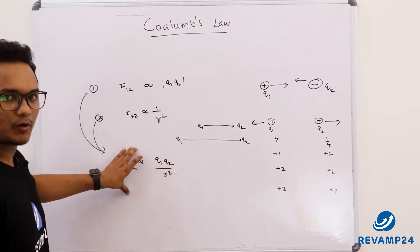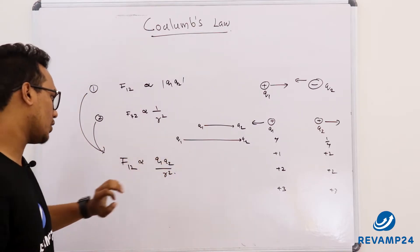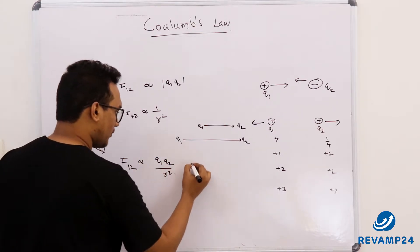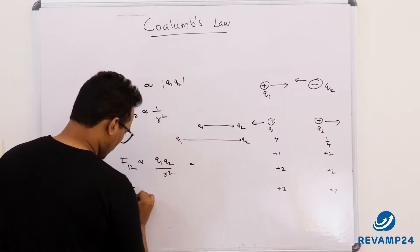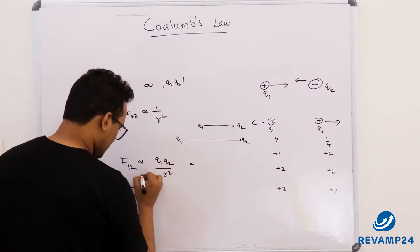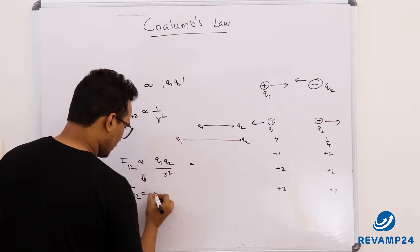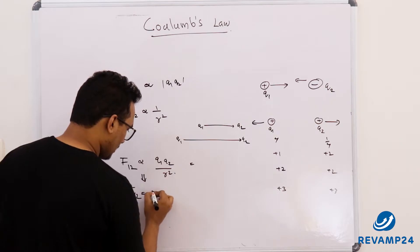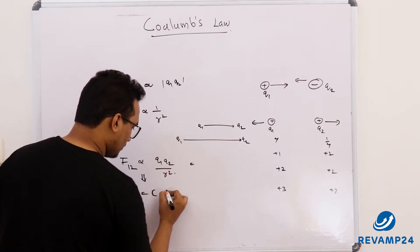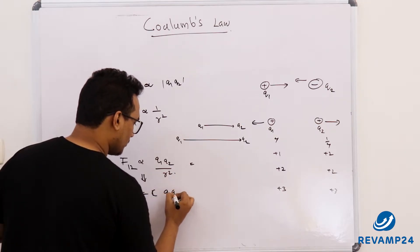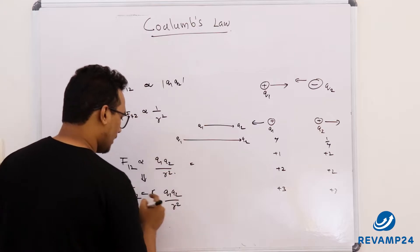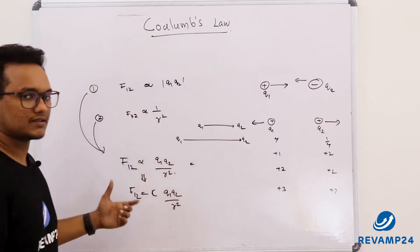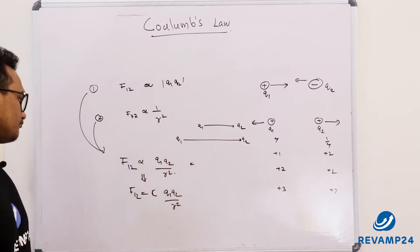To convert a proportionality into an equation, we multiply by a constant C. So F12 = C × q1·q2 / r².